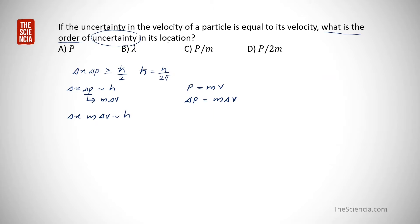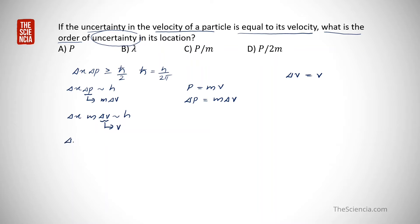Reading the question again: the uncertainty in the velocity of the particle is equal to its velocity. That is, delta v equals v. So we can rewrite this as delta x times m times v approximately equal to h.